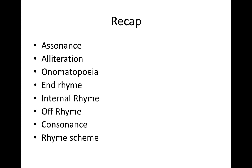So just to recap: we talked about assonance, alliteration, onomatopoeia, four kinds of rhyme — end, internal, off, and consonance — and we talked briefly about rhyme scheme.